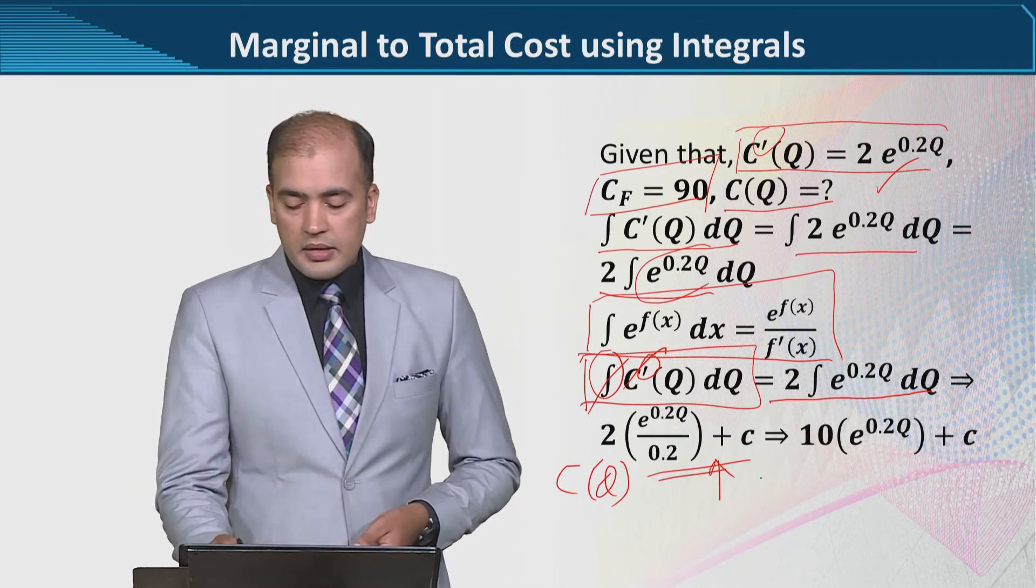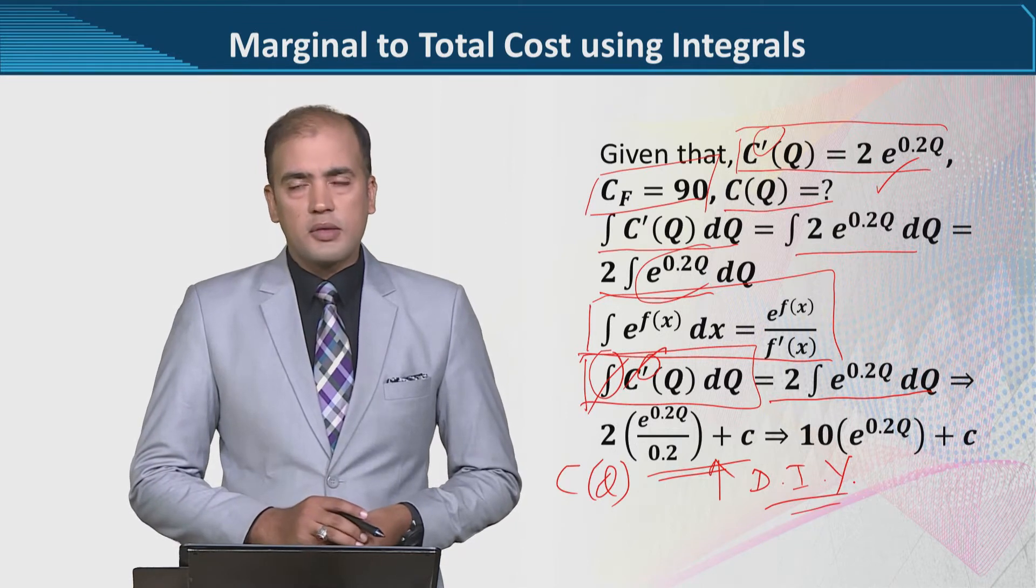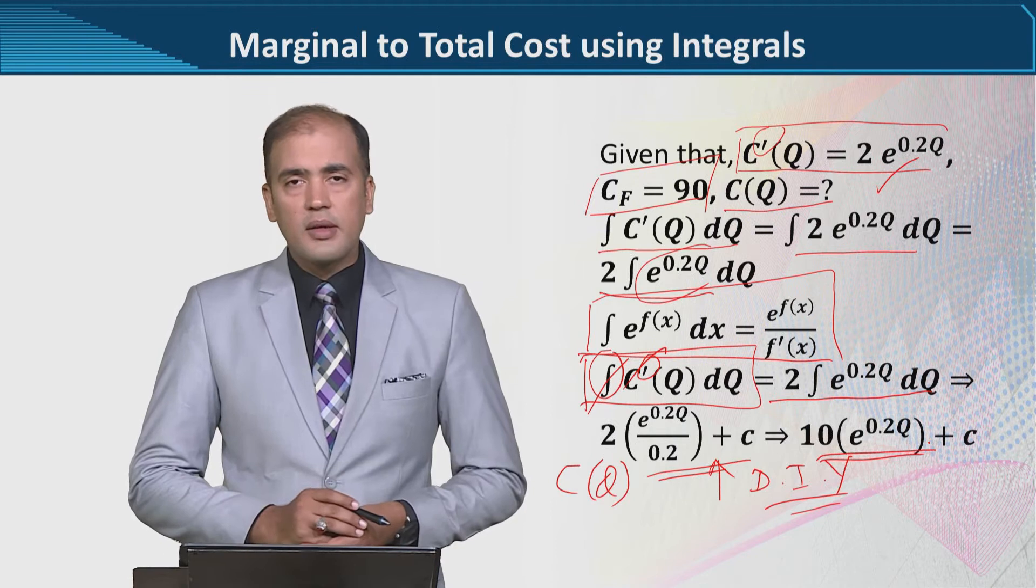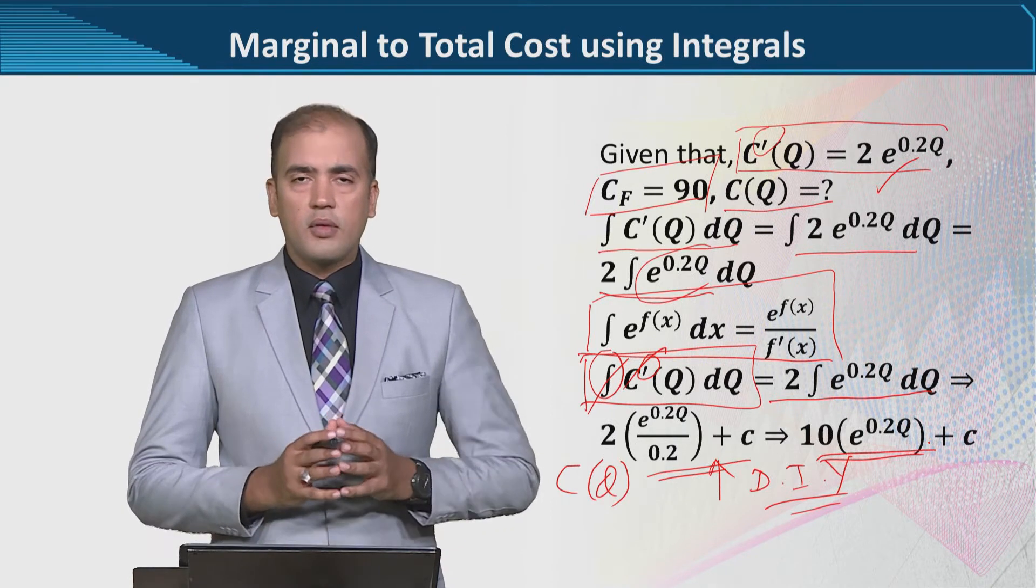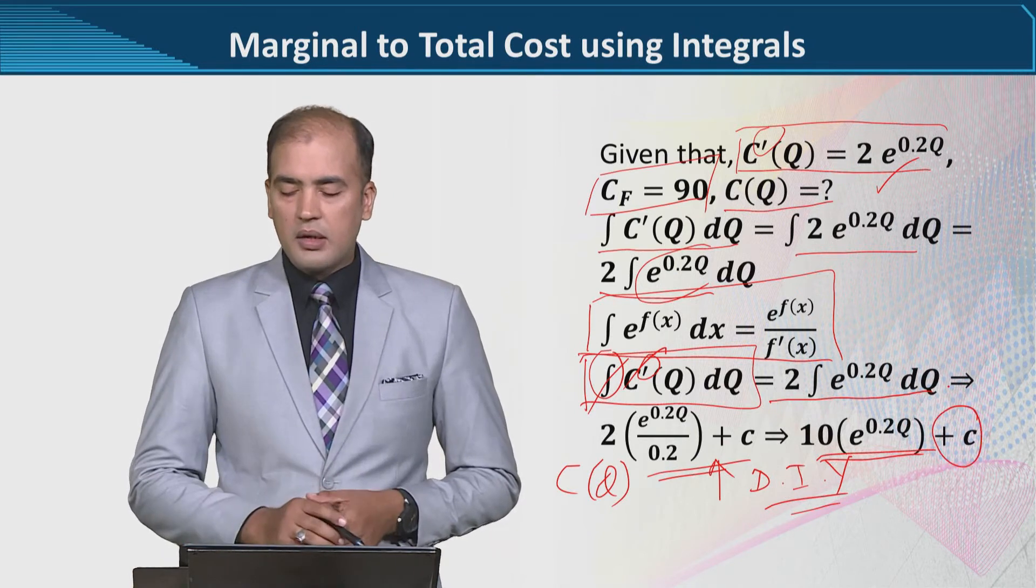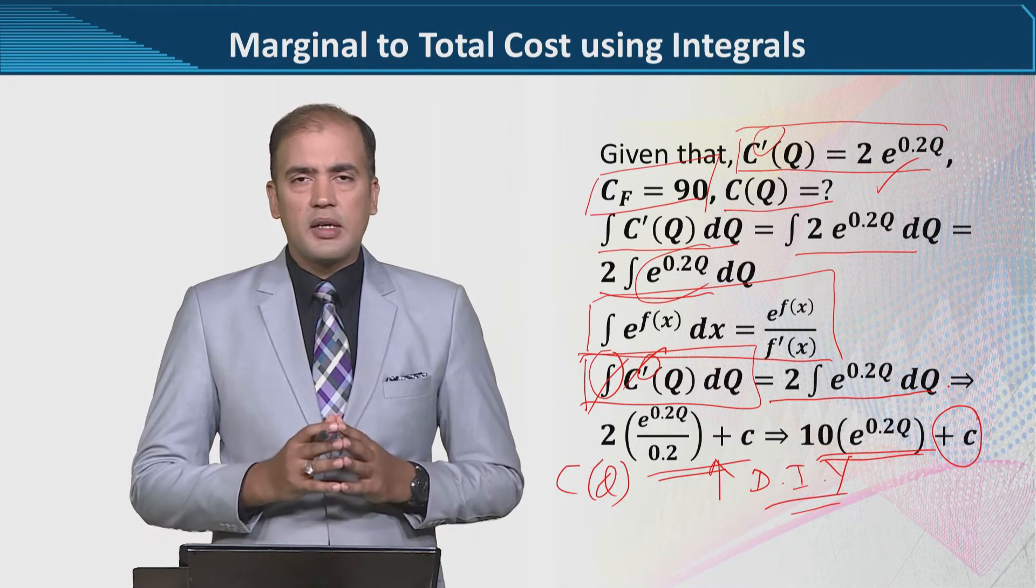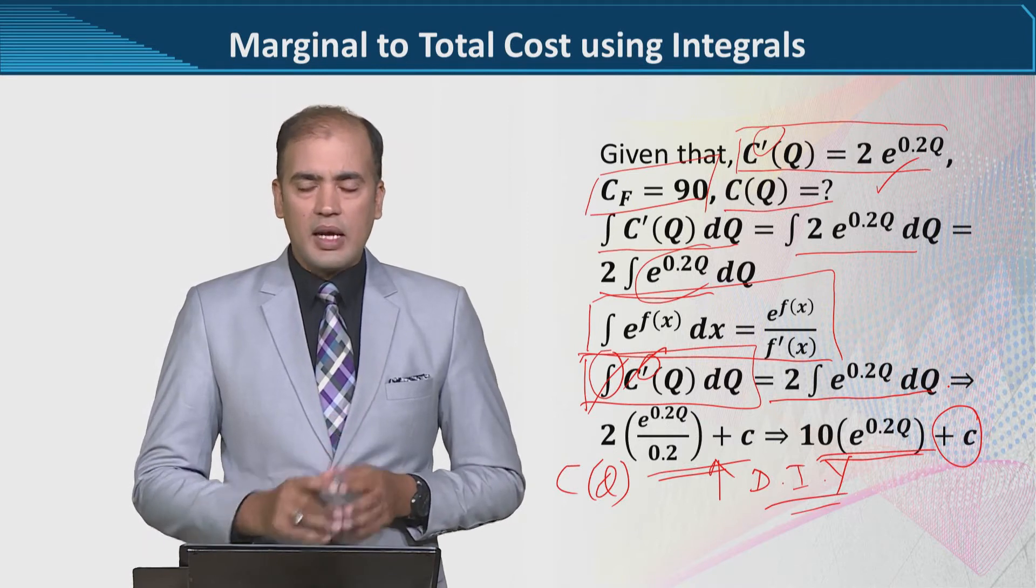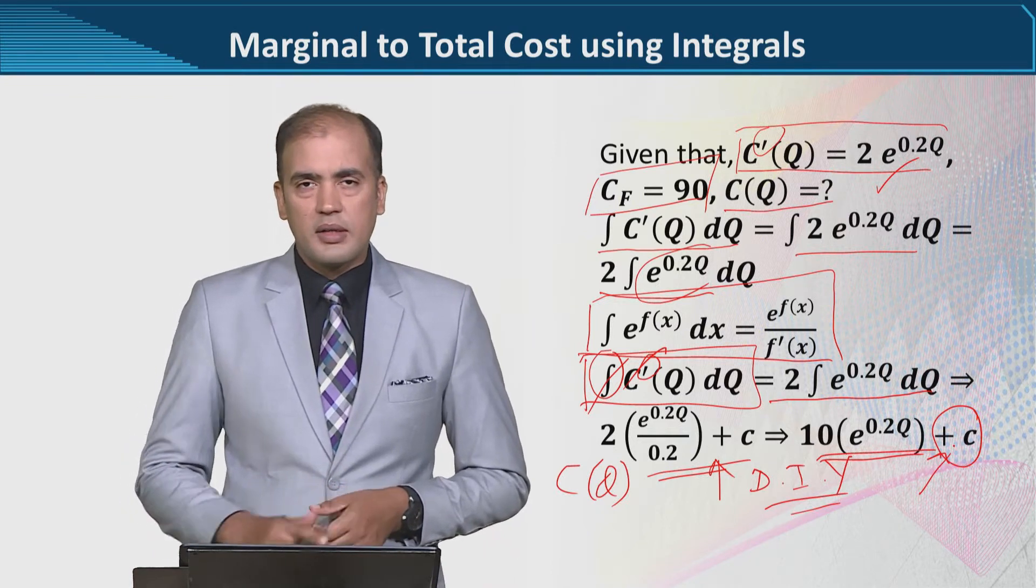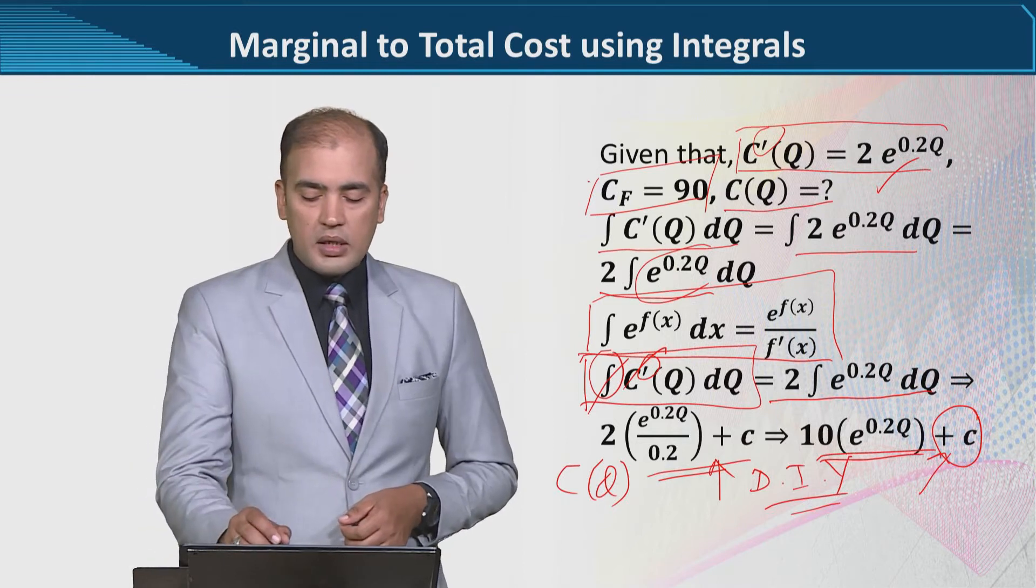And I leave this on you, because we have done this before. And after applying this rule, we will get this, which is the final result of the cost function that we are looking for. However, there is a small glitch in that, and that glitch is the lack of definite result. And the lack of definite result is due to this arbitrary constant. This is something we can get rid of by using the given condition.